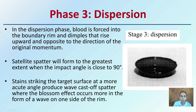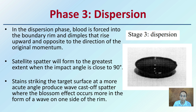The dispersion phase is where the blood is forced into the boundary of the rim and dimples that rise upward and opposite in the direction of the original momentum. It impacted, and now it's dispersing and coming back up. Satellite spatter will form to the greatest extent when the impact angle is closer to 90 degrees. Stains striking the target surface at a more acute angle produce wave cast-off spatter, where the blossom effect occurs more in the form of a wave on one side of the rim — so you won't get a perfectly symmetrical dispersion phase.